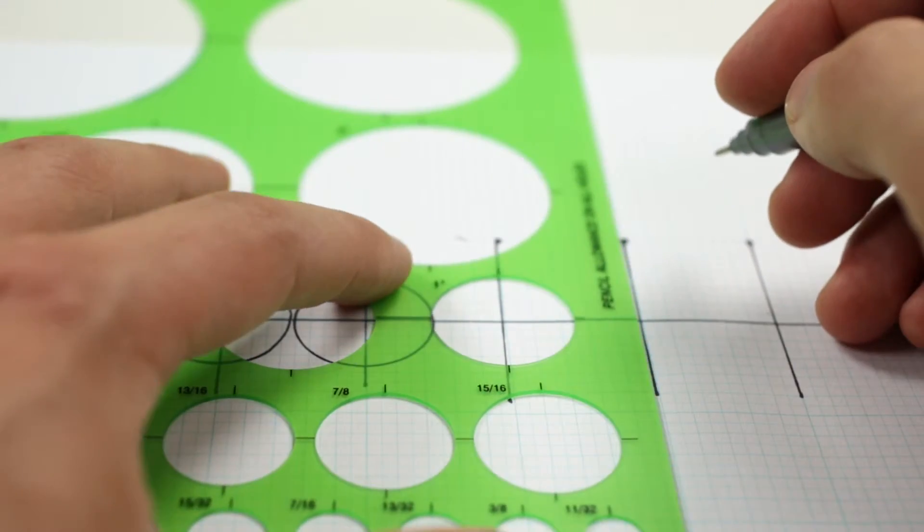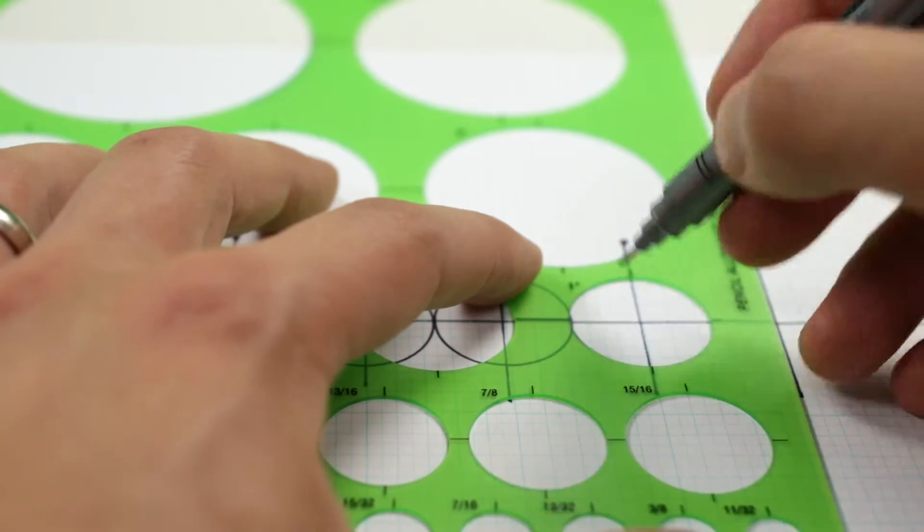Alvin templates are a great time-saving tool. They make it easy to consistently reproduce shapes.